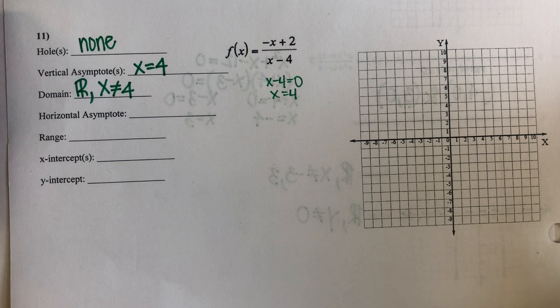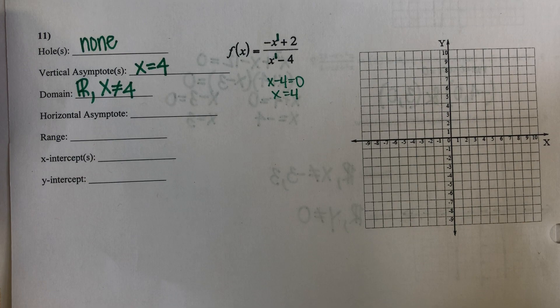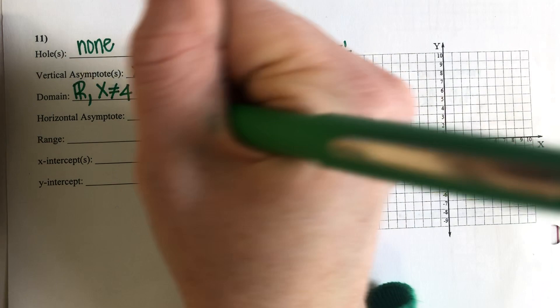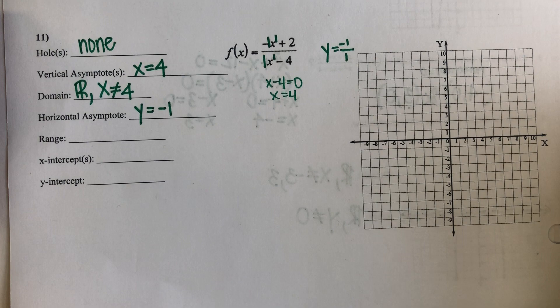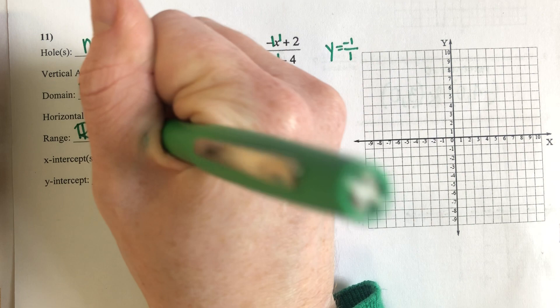My horizontal asymptote — this is where I compare my exponents using BoboBots Eats DC. My exponents are both one, and my leading coefficients are negative one and positive one. So Y equals negative one divided by positive one — my horizontal asymptote is at Y equals negative one. So that affects my range — my Y values are not allowed to be negative one.